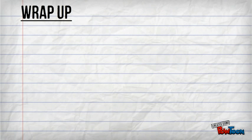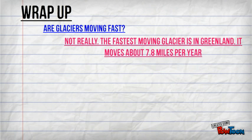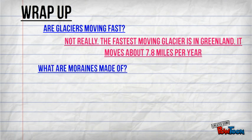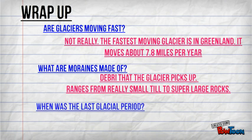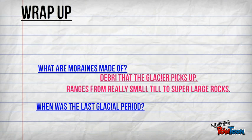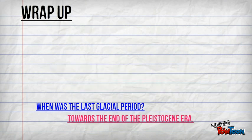Glaciers are not moving fast — they're only moving a couple miles per year. Debris that was picked up by a glacier is what moraines are made of. The last glaciation period was during the Pliocene.